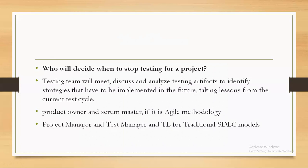If it is an agile process, the product owner and scrum master are responsible for the test closure activity. If you follow a traditional SDLC model like V-model or waterfall model, it is the project manager and test manager who are responsible.